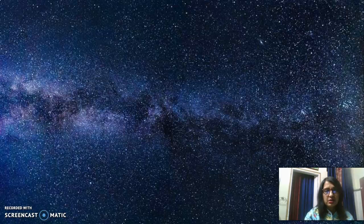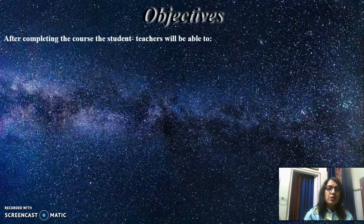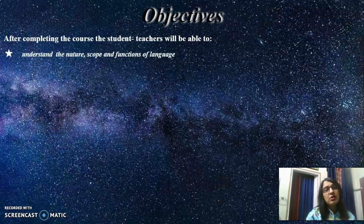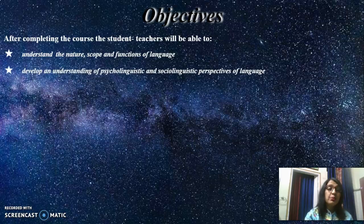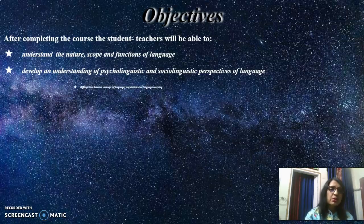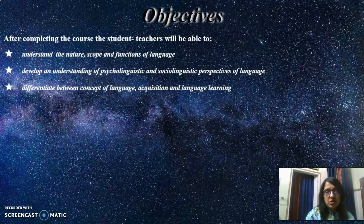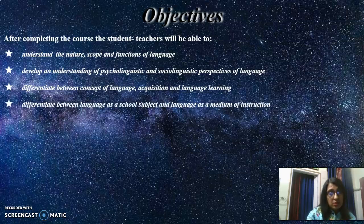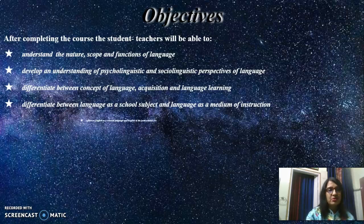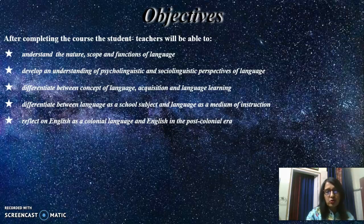Here are the objectives. After completion of the course, the student teachers will be able to understand the nature, scope and functions of language. They will be able to develop an understanding of psycholinguistics and sociolinguistics perspectives of language. They will be able to differentiate between concept of language acquisition and language learning. They will be able to differentiate between language as a school subject and language as a medium of instruction.